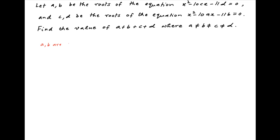We are given that a and b are roots of the equation x squared minus 10cx minus 11d equals 0. Therefore, the sum of the roots a plus b is equal to 10c, and the product of the roots ab is equal to minus 11d.